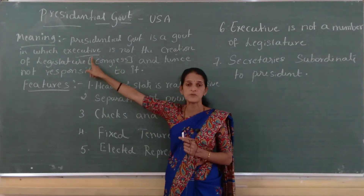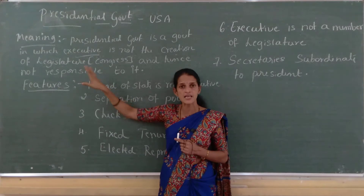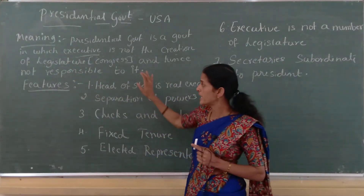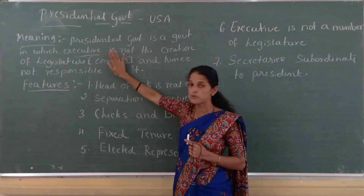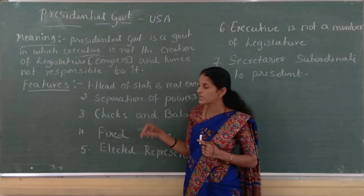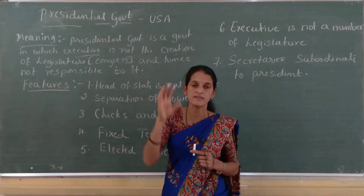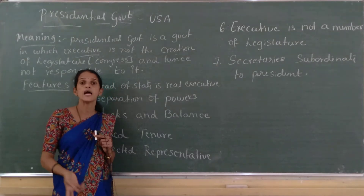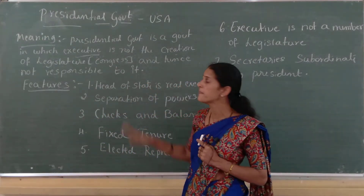There is no relation between the legislature and the executive in the presidential form of government, because the executive or president is not a member of the legislature. Hence, there is no relation between executive and legislature. The executive is responsible only to the citizens of the state, not to the legislature, because the legislature did not create the executive. Only the citizens of the United States of America elect the president, so the president is responsible only to the citizens of the nation.